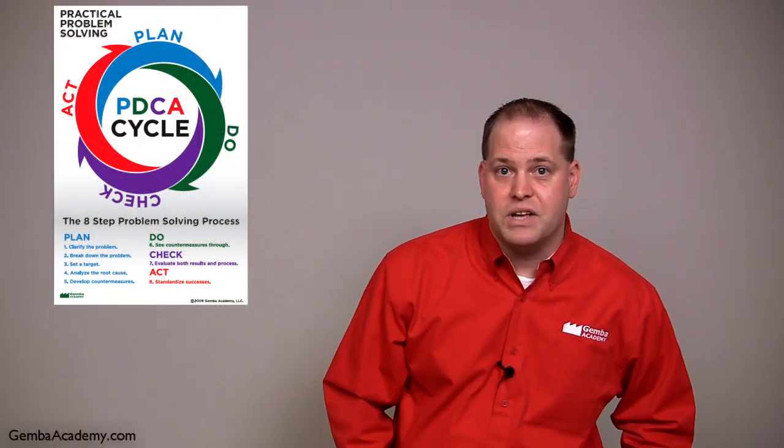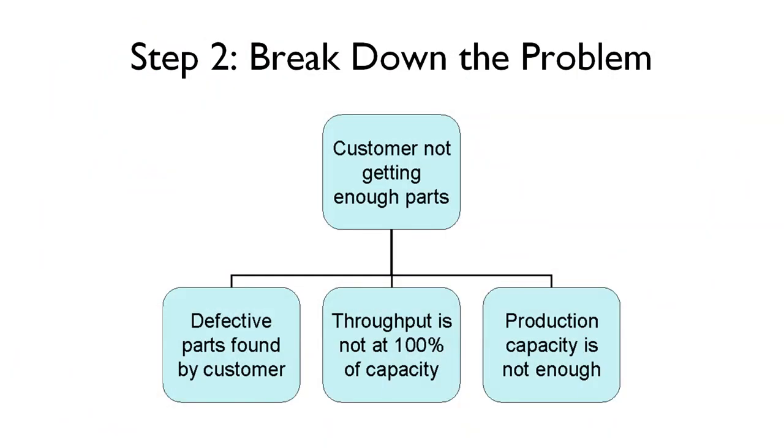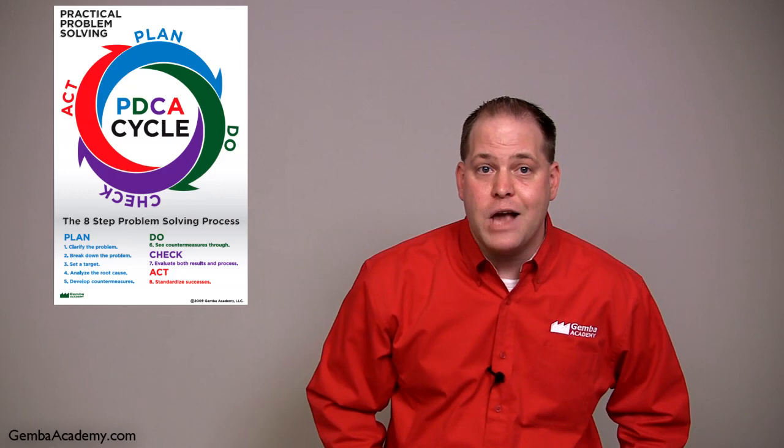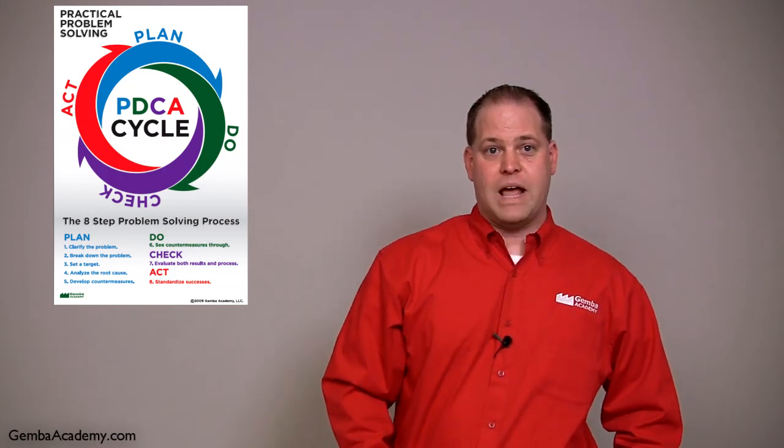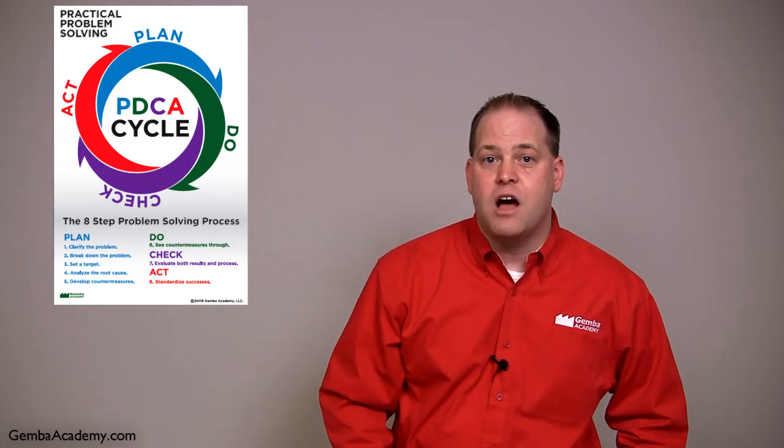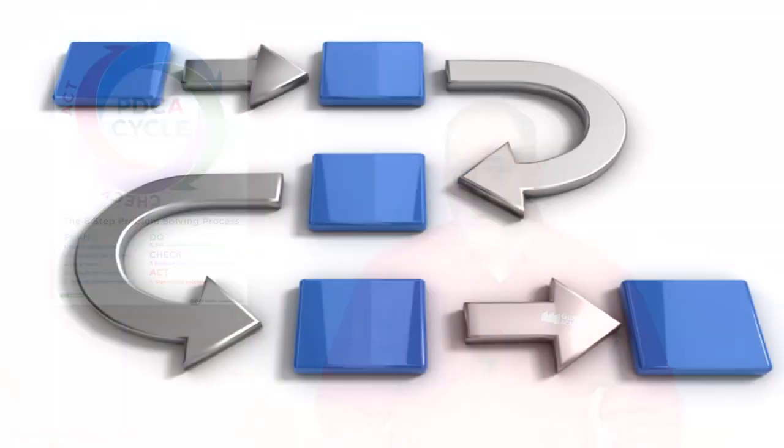The second step of the process has us breaking the big, vague problem down into smaller, more specific problems. Again, we want to go see the actual problem process or situation with our own eyes. During this step, we'll also take time to study the various inputs and outputs of the process, helping us to properly scope and prioritize our efforts.